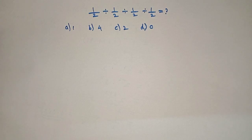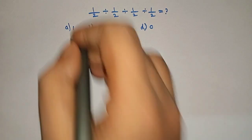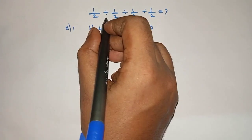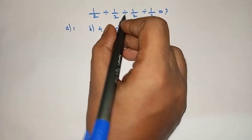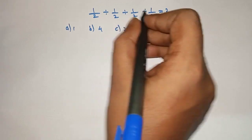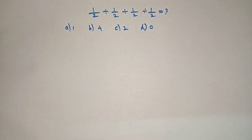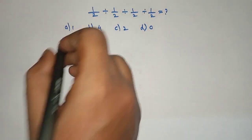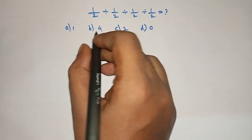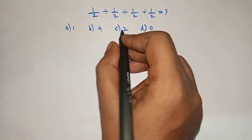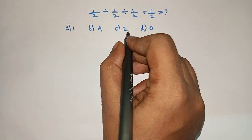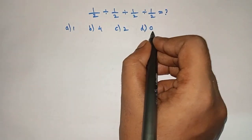Hello friends, welcome to Aha Math. 1/2 divided by 1/2 divided by 1/2 divided by 1/2 is equal to what? Option A: 1, Option B: 4, Option C: 2, Option D: 0.